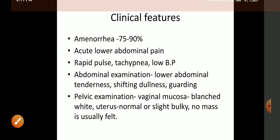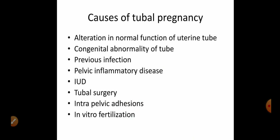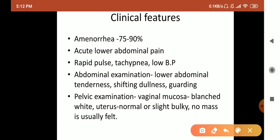Now let's study the clinical features of ectopic pregnancy. First is amenorrhea — stoppage of the menstrual cycle — occurring in 75 to 90 percent of cases. However, in about 10 percent of remaining cases, ectopic pregnancy ruptures before the woman even misses a period, so amenorrhea may not always be present.